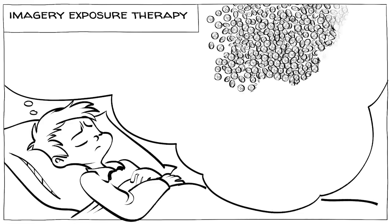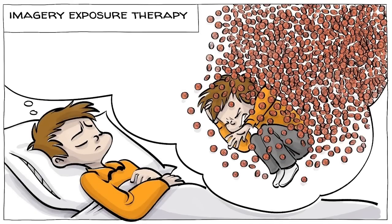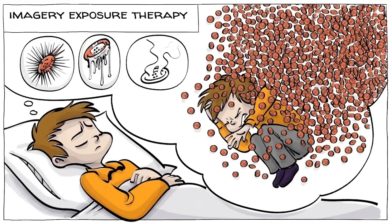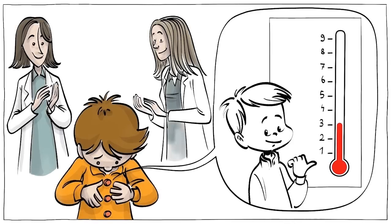Next they tried imagery exposure therapy. For the seven sessions that followed, the boy was prompted to just visualize buttons falling on him and imagine how they looked, felt, and smelled. This time, the boy's self-reported levels of distress reduced dramatically.